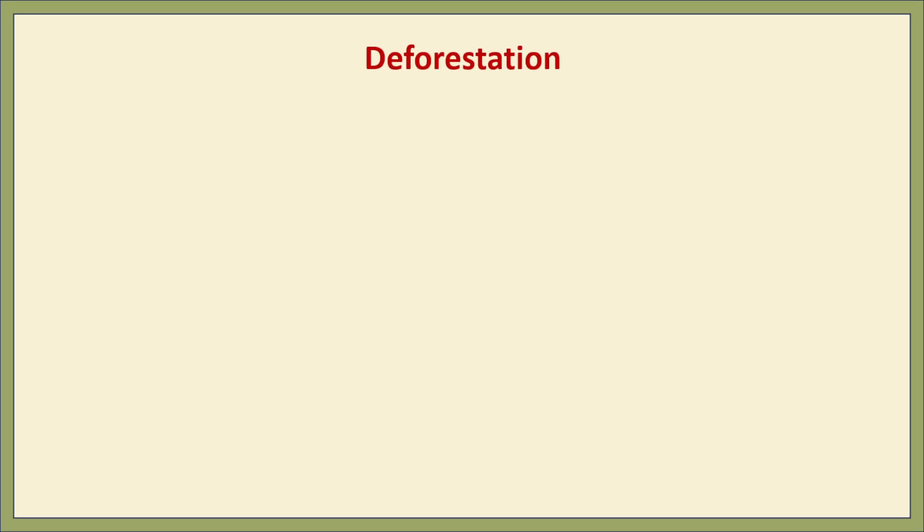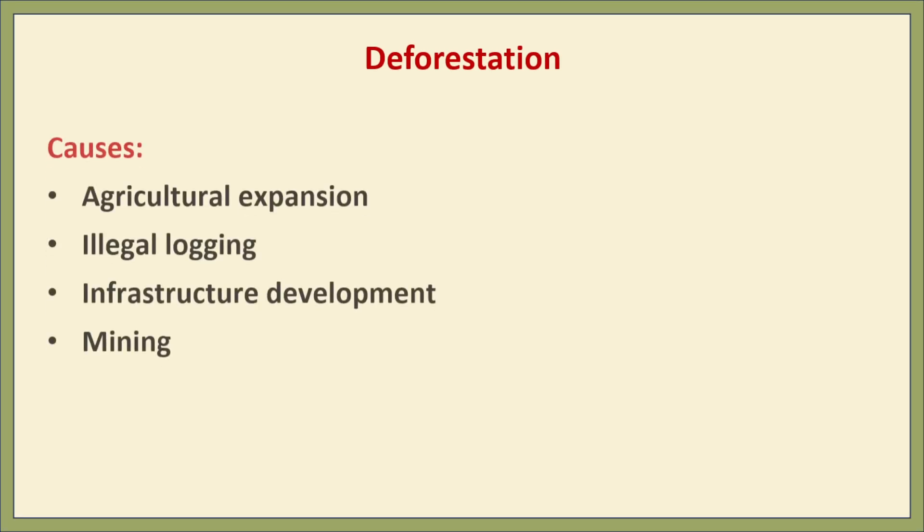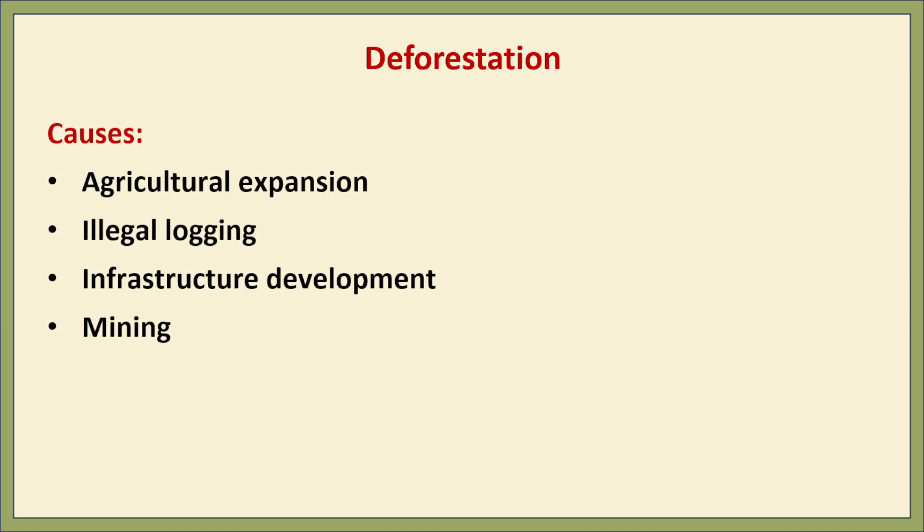Causes of deforestation. Agriculture expansion: forests are cleared to make way for crops and pastures. Illegal logging: trees are cut down unlawfully for timber and firewood. Infrastructure development: roads, dams and buildings encroach upon forest land. Mining: extracting minerals requires clearing large forested areas.